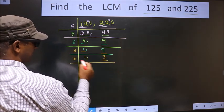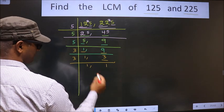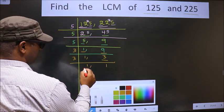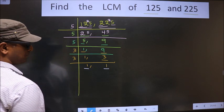3 is a prime number, so we take 3 times 1 is 3. So now we got 1 in both the places.